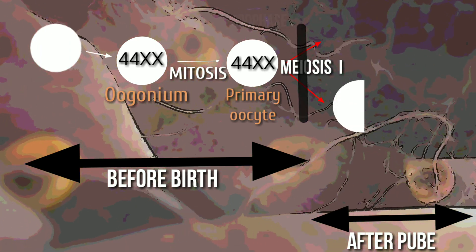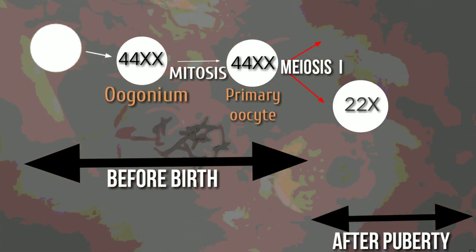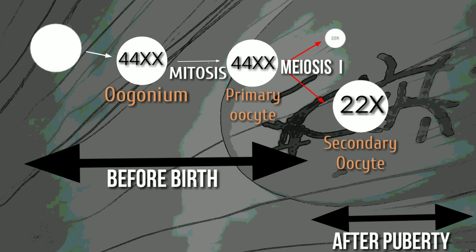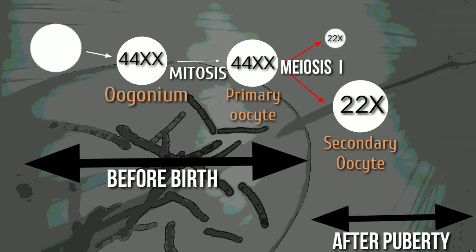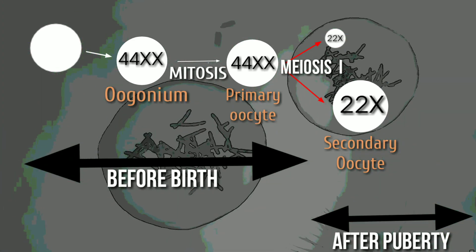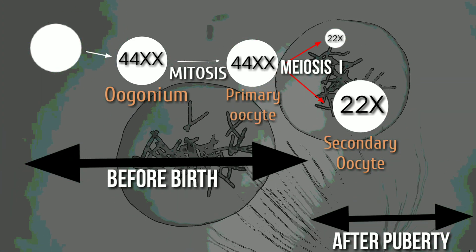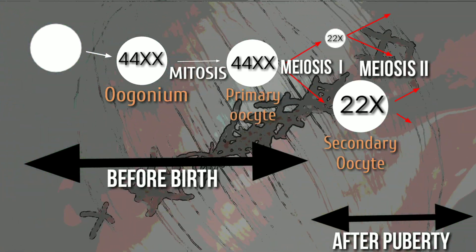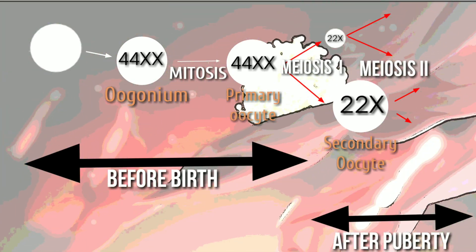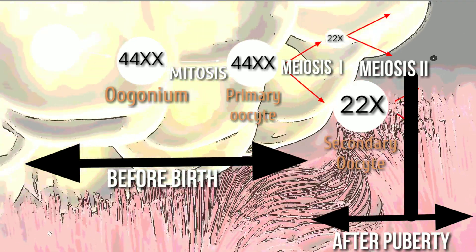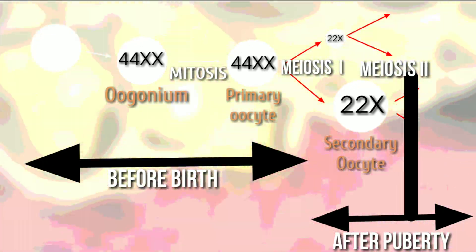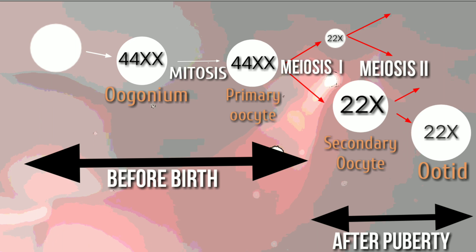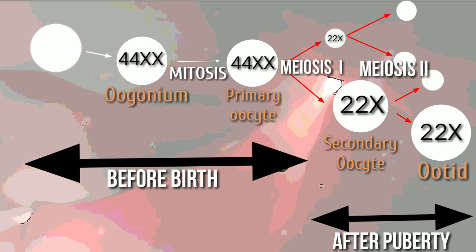Meiosis 1 completes to produce a single secondary oocyte and the first polar body, which is a small vestigial cell with very little cytoplasm and is not useful further in mammalian reproduction. The second round of meiosis then begins; the secondary oocyte is arrested in metaphase 2, and only after ovulation and fertilization is complete does an ovum form, along with 3 polar bodies total.